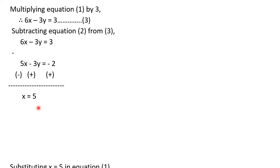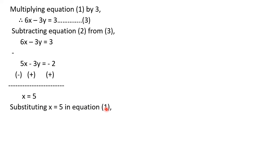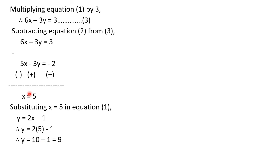Now substituting x = 5 in equation 1 (y = 2x − 1): y = 2(5) − 1 = 10 − 1 = 9. So x = 5 and y = 9. But we don't stop here — we need to find the fraction. Therefore the required fraction is x/y = 5/9.